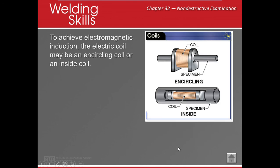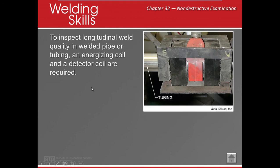Electromagnetic induction, also called eddy current testing, is not used as frequently. An electromagnetic coil is used, and if there is a defect in the material, it changes the current reading. This is commonly used in production settings — pipe is passed through a large coil, and if there's an indication, the gauges move and alert us to a problem.